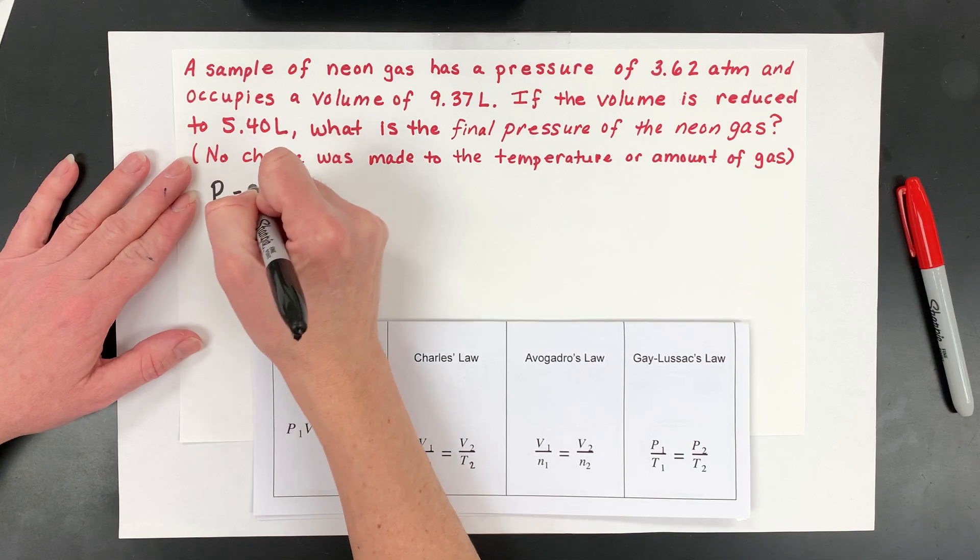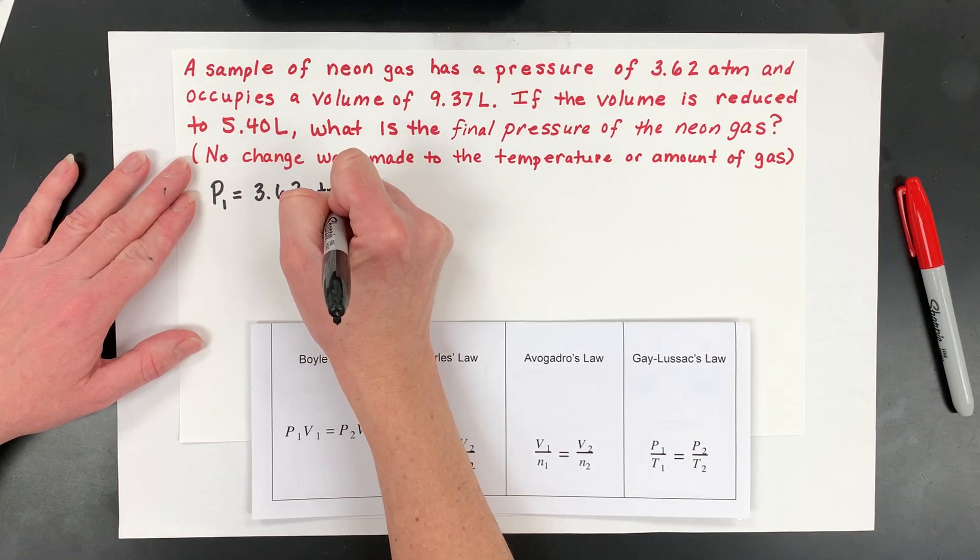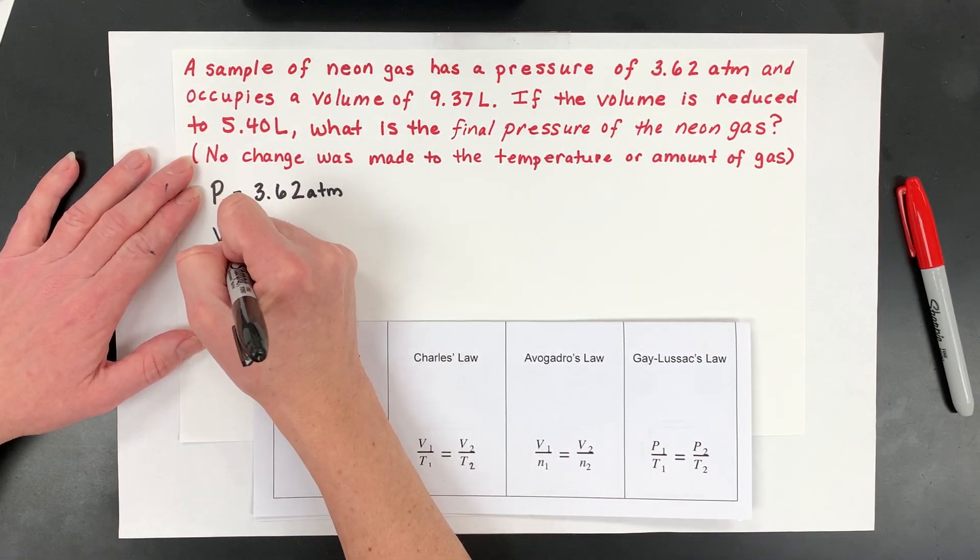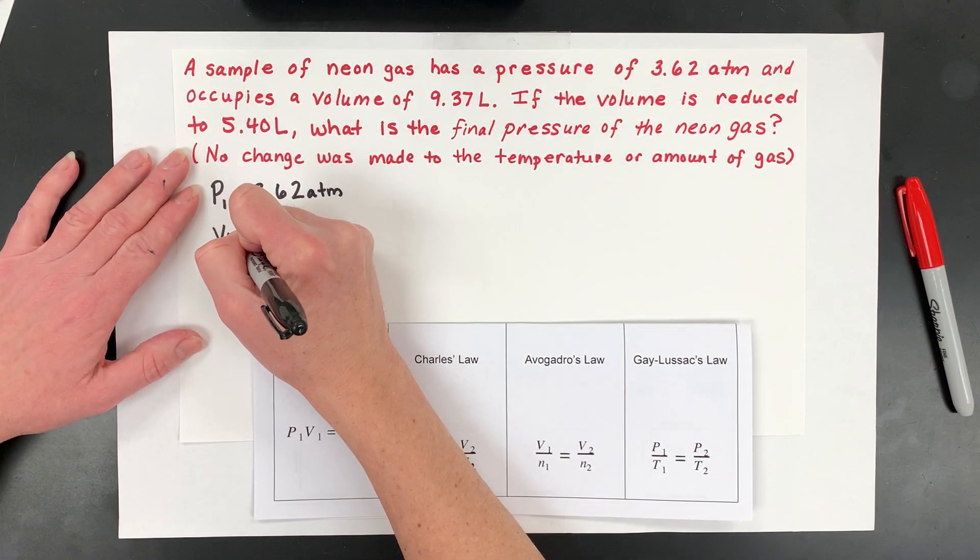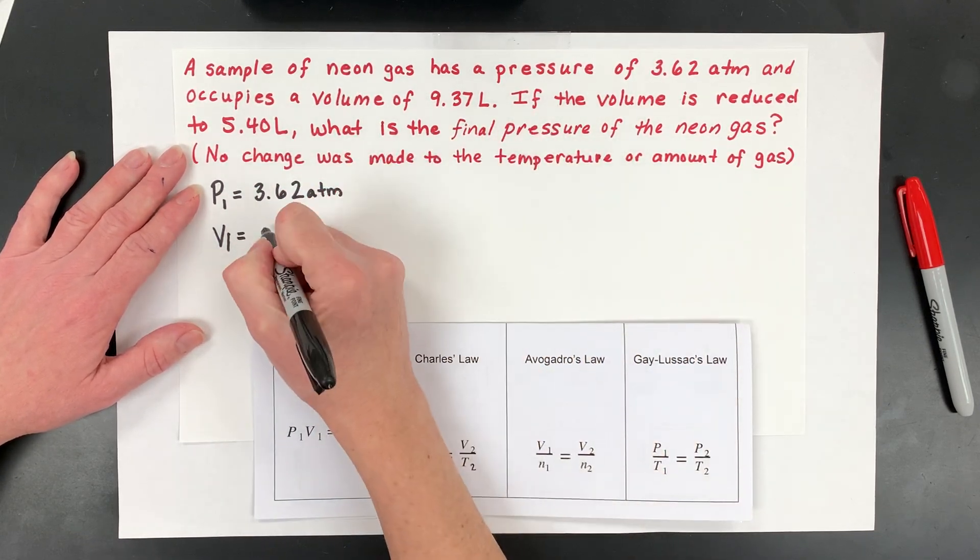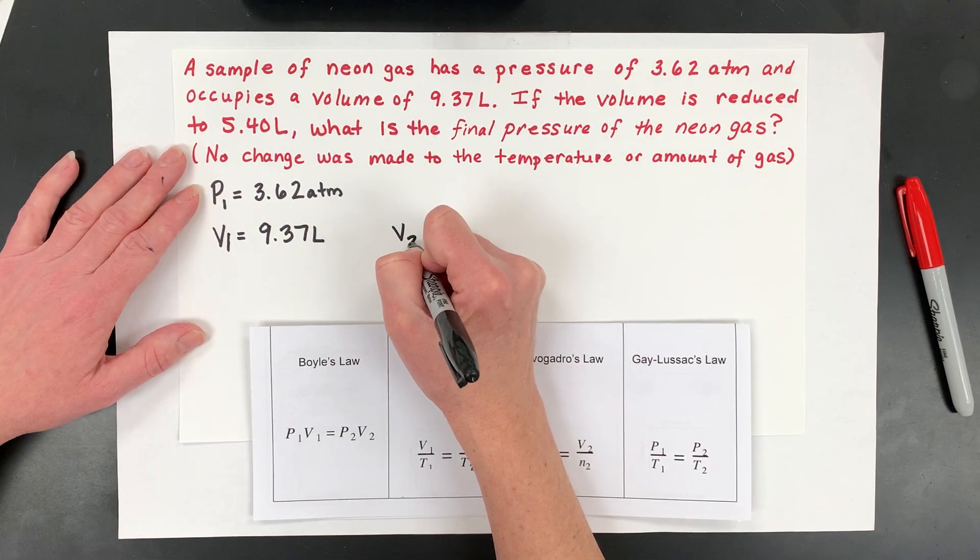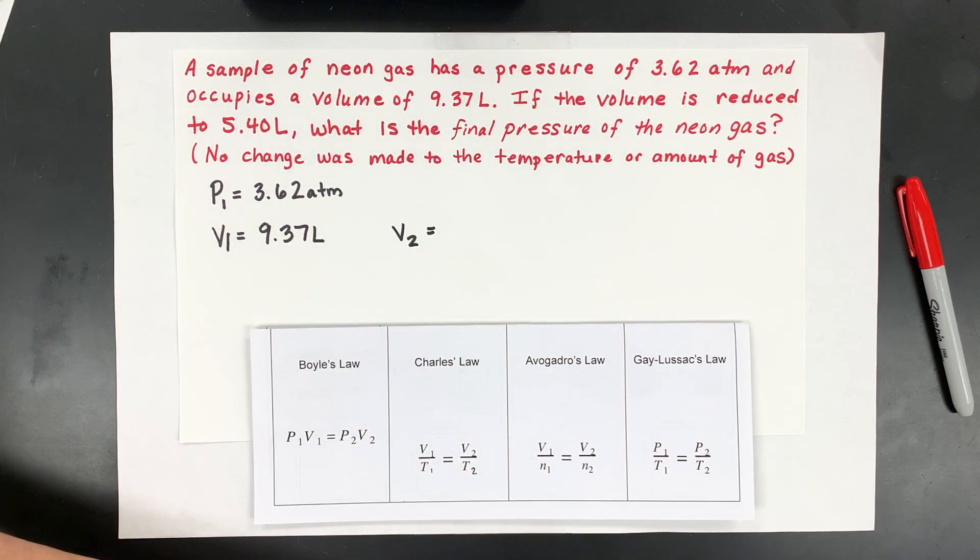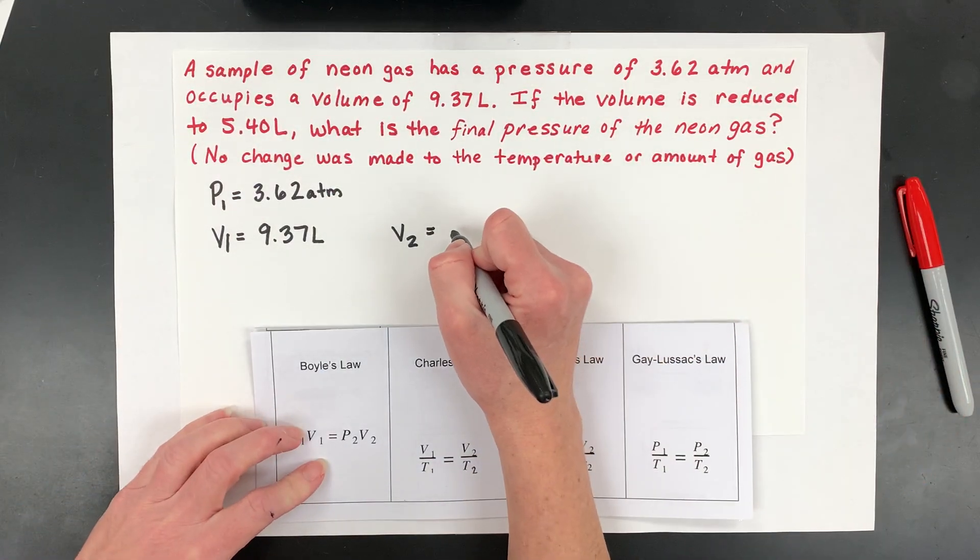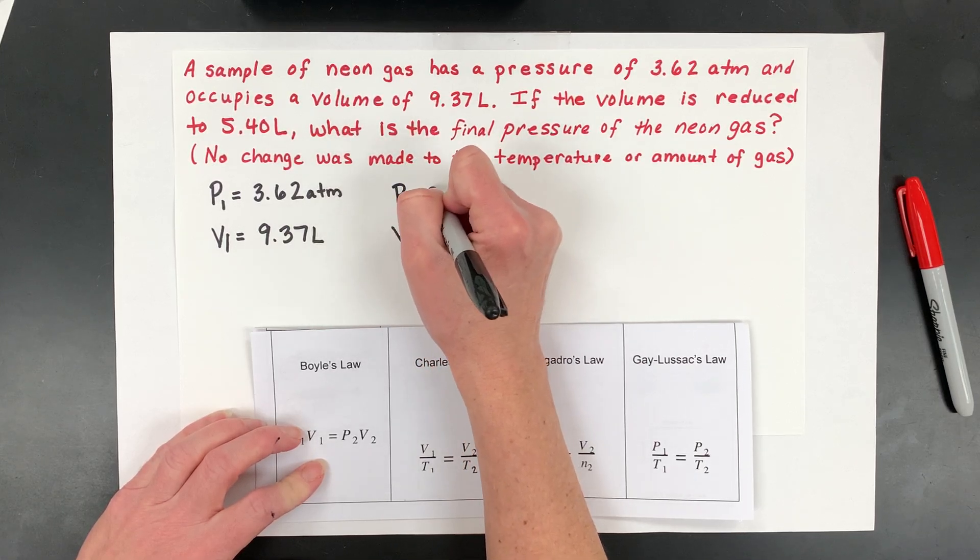So pressure one is 3.62 atm. Sometimes people will use a little i right there for initial, and then my initial volume or my first volume, and they might put like a little i or a one. My initial volume was 9.37 liters. Now, kind of like my example, but in the opposite, what if I took these gas particles and I decrease the volume to, in this case, 5.40 liters?